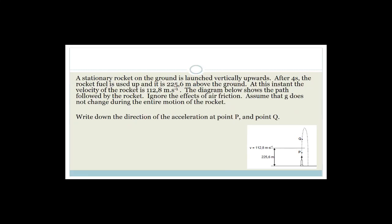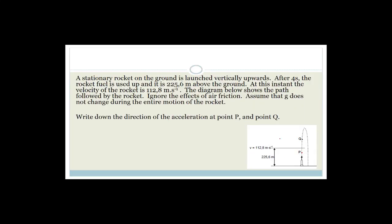Now it says: write down the direction of acceleration at point P and point Q. At point P the rocket is speeding up - it's going from zero to 112.8 meters per second - so the direction of acceleration at P is upwards. The direction of the acceleration at point Q is downwards, because the only force acting on it is the force of gravity.